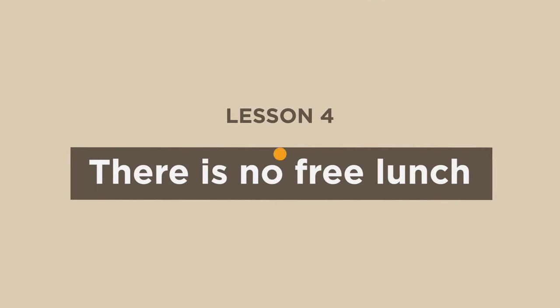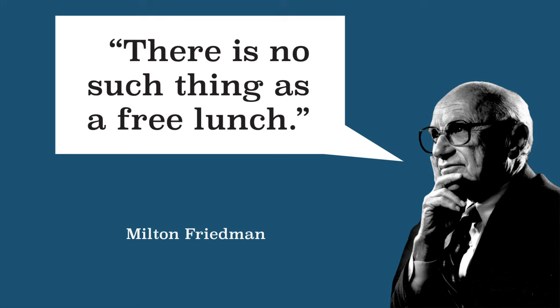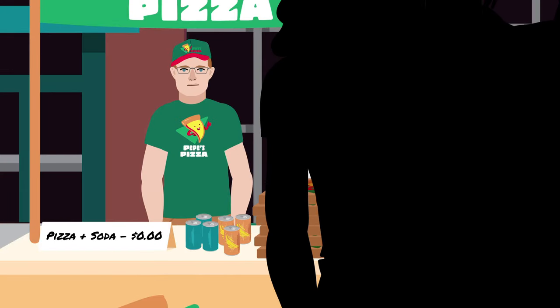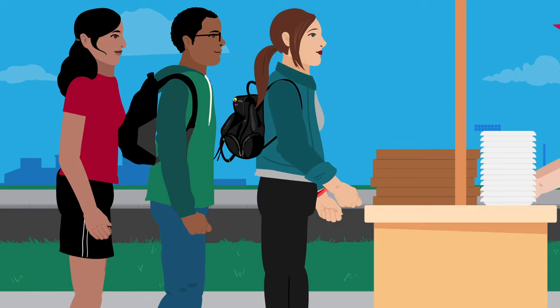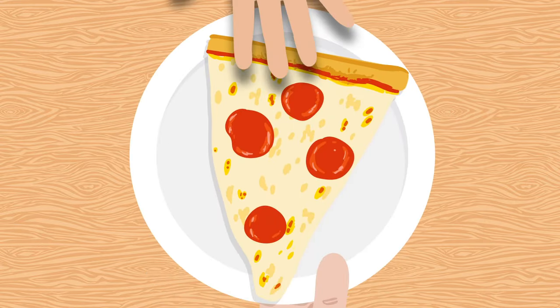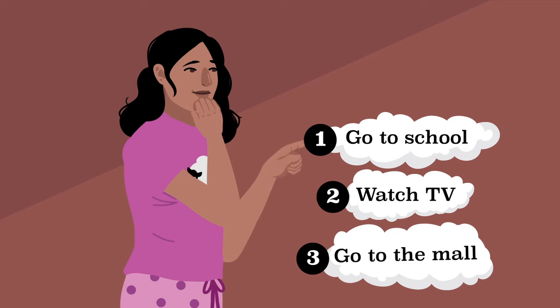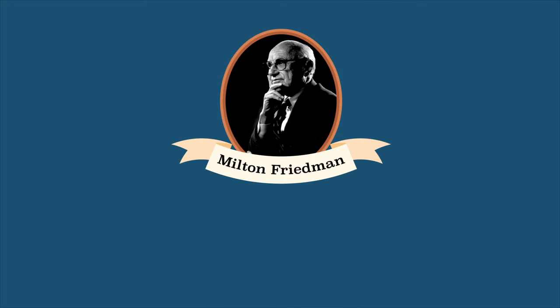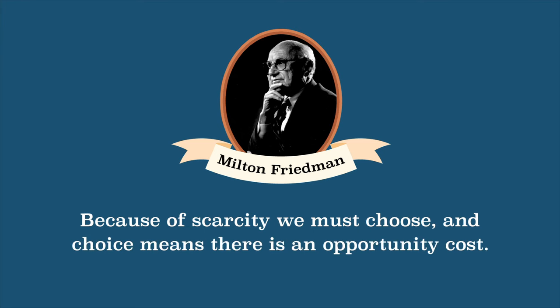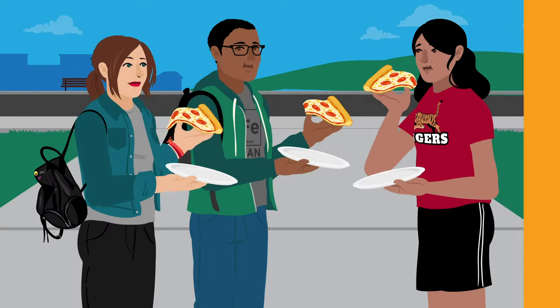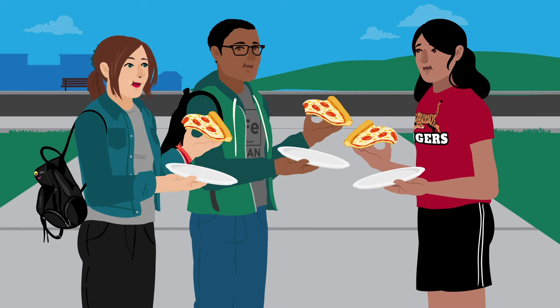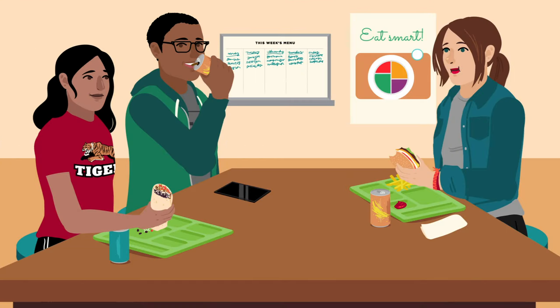Lesson 4: There is no free lunch. Nobel laureate Milton Friedman was fond of saying, 'There is no such thing as a free lunch.' You've now arrived at the pizza stand offering pizza and soda for $0.00. Wouldn't this be a free lunch? You didn't pay a price for the pizza because the price was zero. So it may not have a cost in terms of money, but remember, anytime you make a choice, there is a cost — an opportunity cost. Because of scarcity, we must choose. And choice means there is an opportunity cost. The reason there is no free lunch is that your choice to eat pizza out on the sidewalk in front of your school means you're giving up the opportunity to dine elsewhere — for example, eating in the cafeteria with your friends.